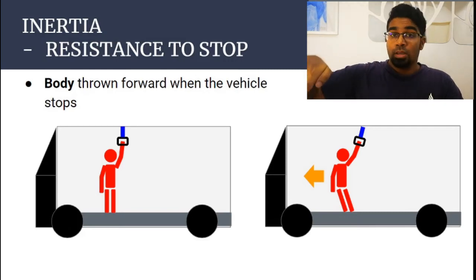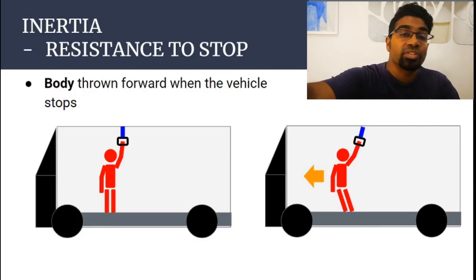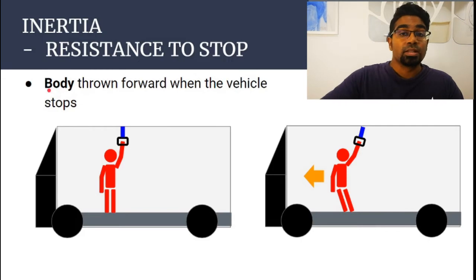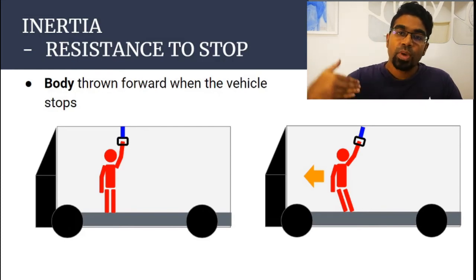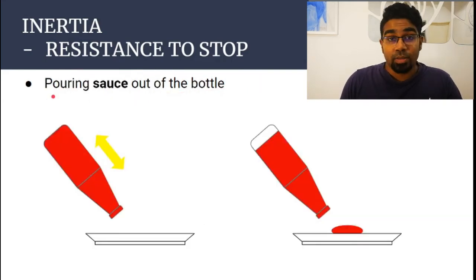This is also the function of a seatbelt during a car accident. Without the seatbelt, our body will not want to stop moving — it will continue its state of motion forward. Without the seatbelt, the body would be thrown out of the car. The seatbelt is there to stop the effect of inertia during an accident and prevent us from being thrown out of the vehicle for safety.